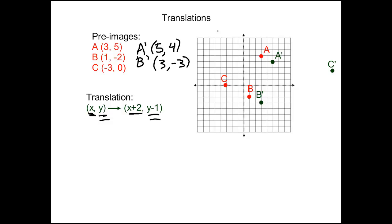For C prime, if you add 2 to the x-coordinate, you get negative 1. If you subtract 1 from the y-coordinate, you also get negative 1. When you plot (-1, -1), you end up here.